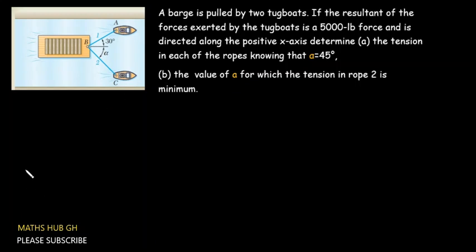Hello everyone, you are welcome to this lesson. In this video, you are going to solve this question on the screen. The question says: a barge is pulled by two tugboats. If the resultant of the forces exerted by the tugboats is a 5000-pound force directed along the positive x-axis, determine (a) the tension in each of the ropes knowing that angle alpha is 45 degrees, and (b) the value of alpha for which the tension in the second rope is at its minimum value.